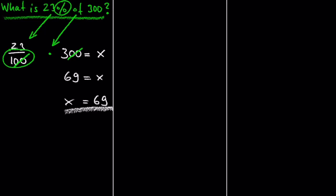But what if the question is 23% of what is 69? In this case, we are looking for the 300, which is the unknown number in the middle of the equation.